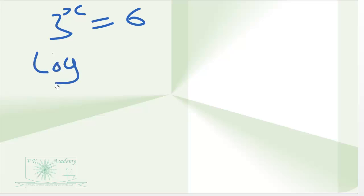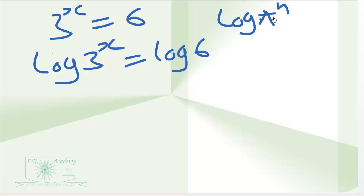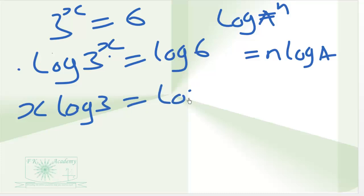So we have logarithm of 3 exponent x is equal to logarithm of 6. We apply the power rule of logarithm. Logarithm of a exponent n is equal to n log a. So x multiplies log 3. And that gives us log 6.